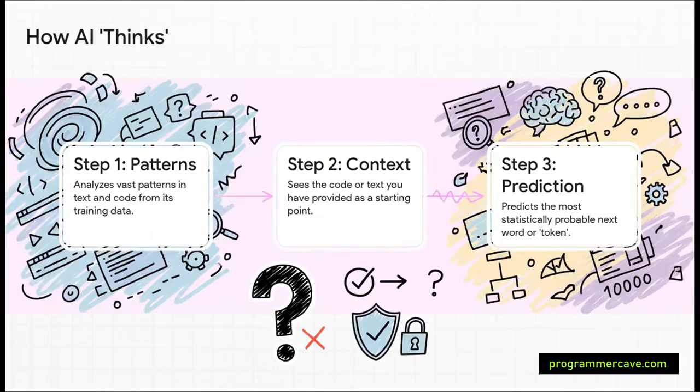The easiest way to think about a large language model is as the world's smartest, most powerful autocomplete. I mean, it's scanned billions of lines of code. So when you prompt it, it's not really reasoning like a human. It's looking at the sequence of words or tokens you gave it, and it's making a statistical bet on what the most likely next token should be, all based on the patterns it's seen before.